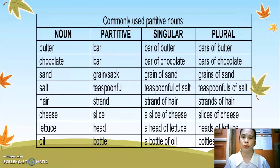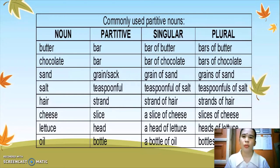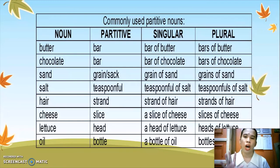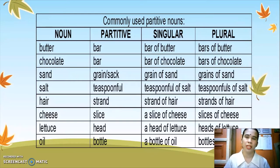These are the commonly used partitive nouns. It's divided into four columns: noun, partitive, singular, and plural. This answers our earlier question of how partitive nouns help non-countable nouns become singular or plural. In this table, we can see words that will make the non-countable nouns singular and plural. The partitive plays a big role in this transformation.